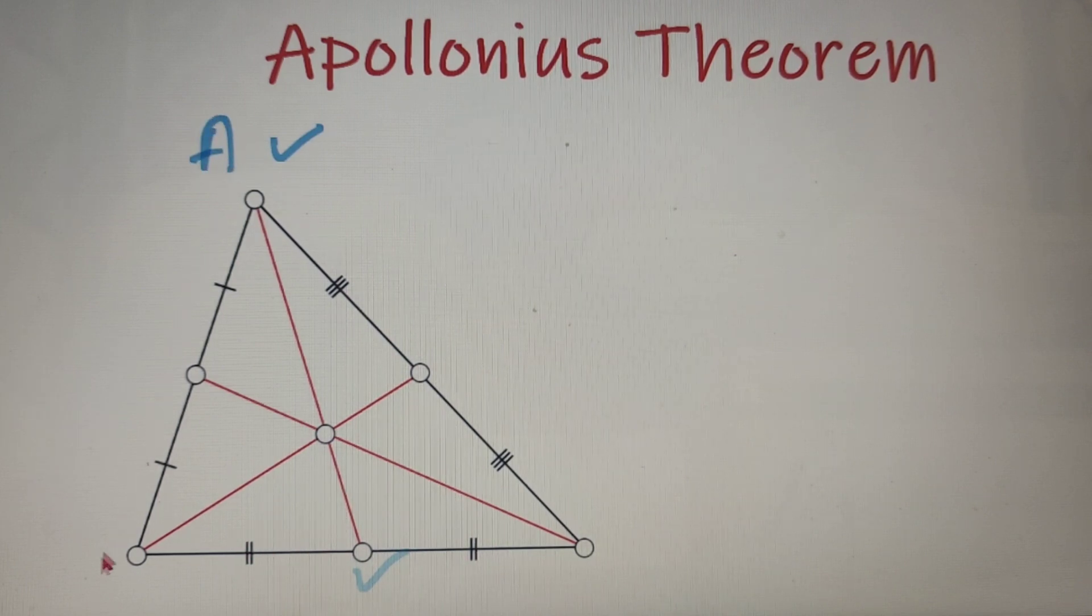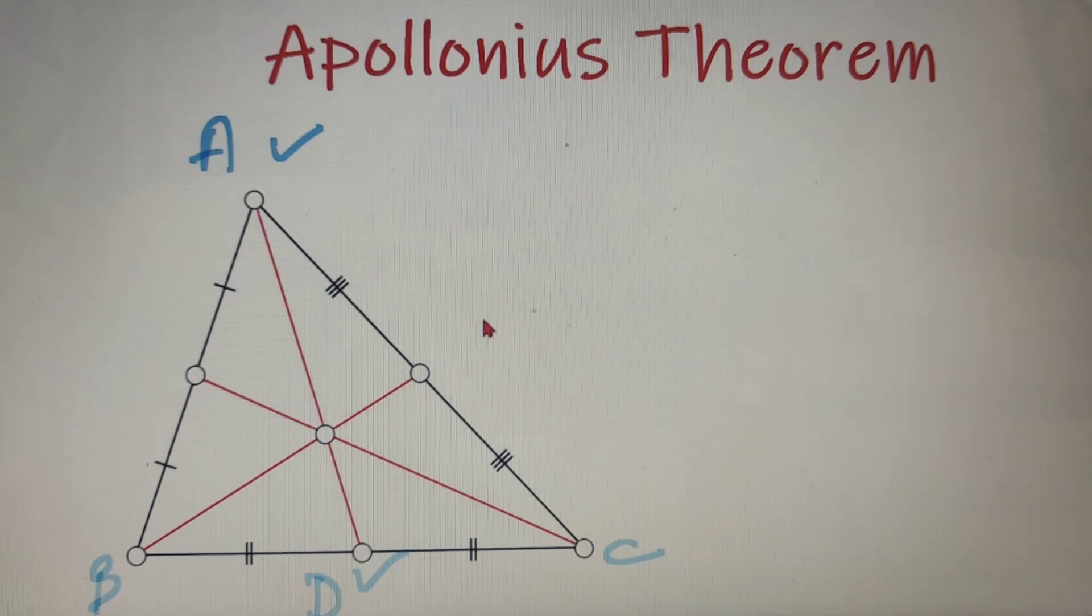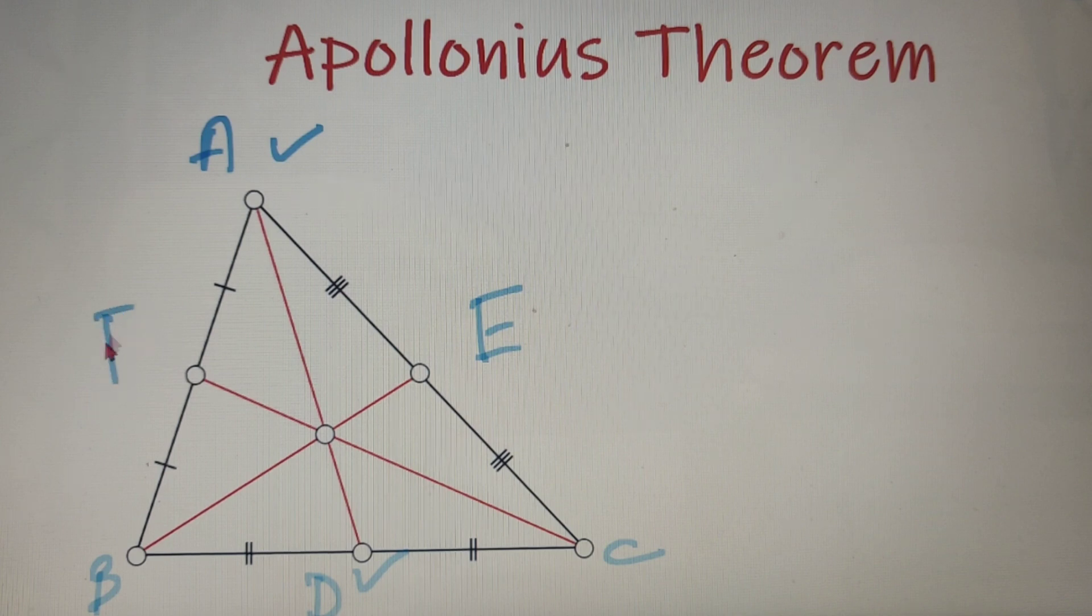So if I name the triangle as A, B and C, then the median AD divides the opposite side BC into equal halves. So same as AD, BE also divides AC into two equal halves and CF also divides AB into equal halves.